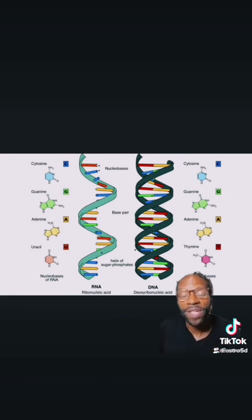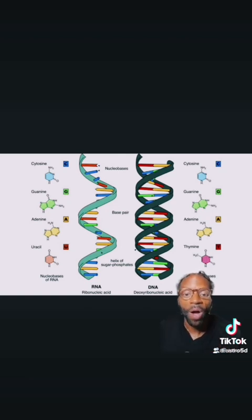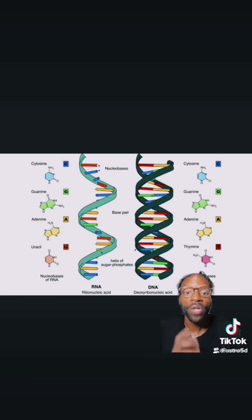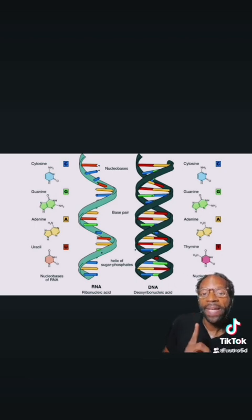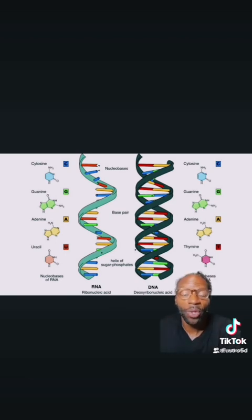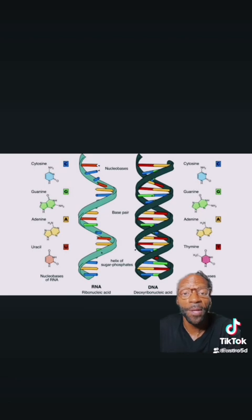RNA was the first genetic material and it is the precursor to DNA. RNA acts as genetic material and it is a catalyst, but as a catalyst it was unstable. So DNA evolved from RNA. DNA came with chemical modifications that made it more stable — you can view it as some alchemy was involved to make humans.